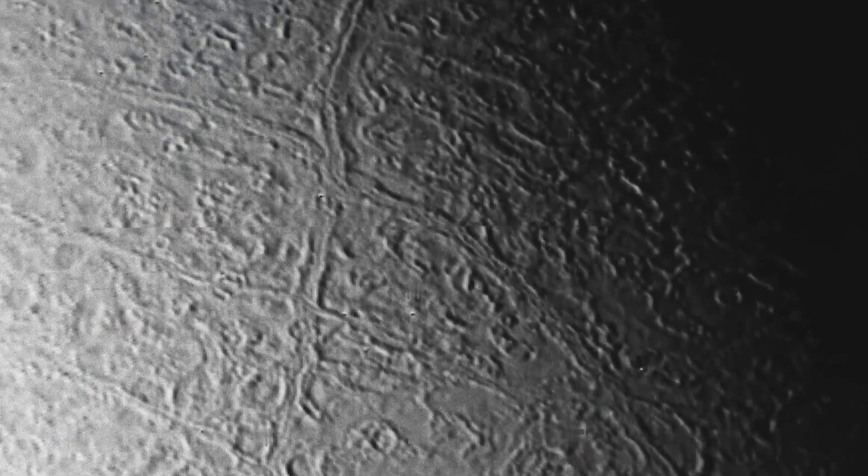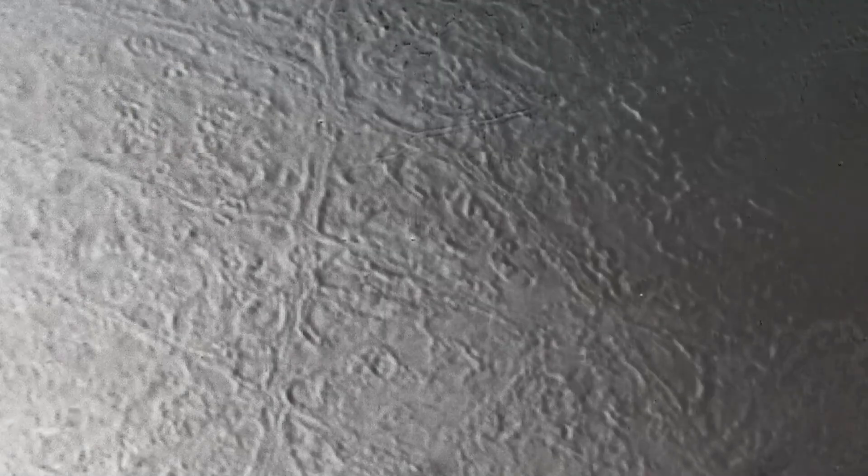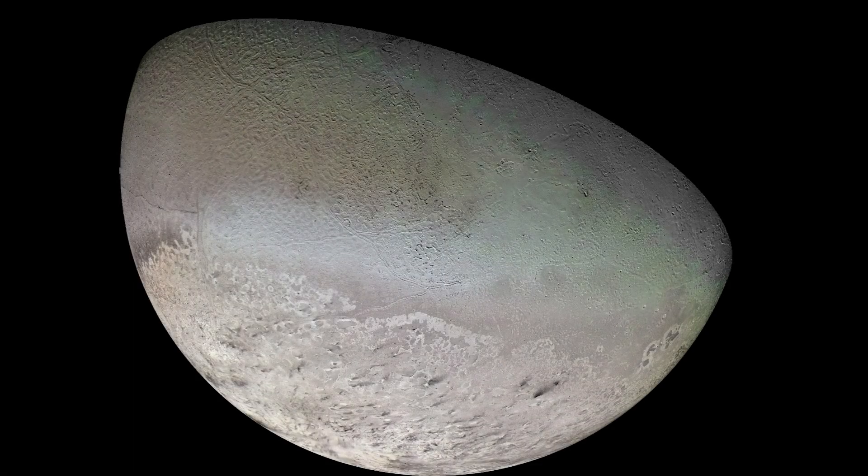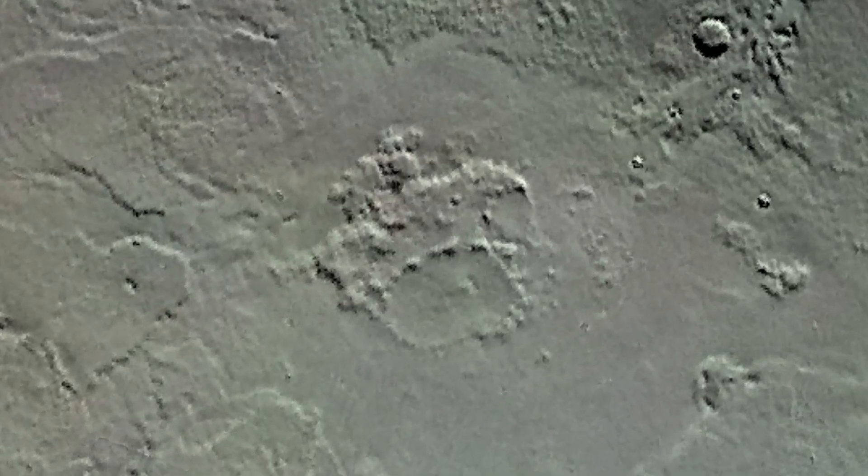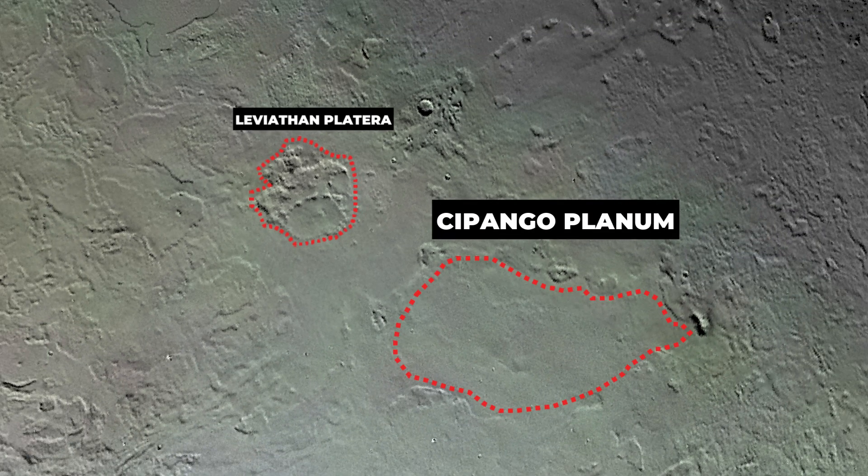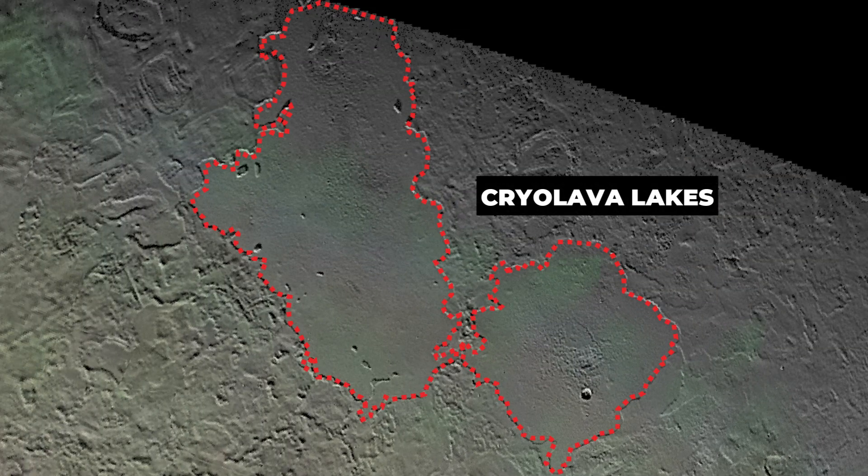Cryovolcanic features on these bodies can take various forms, such as smooth plains, domes, pits, and vents. For context, Triton has a massive caldera called Leviathan Patera surrounded by Tsipangoplanum, a vast cryovolcanic plain spanning over 189,190 square miles or 490,000 square kilometers and linked to two large cryolava lakes.